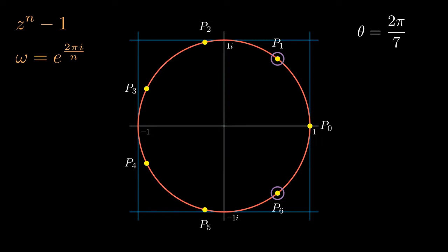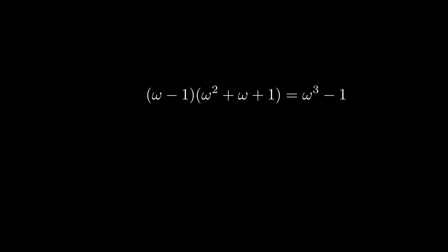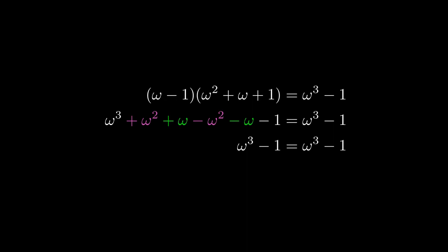The first algebra task is to expand the brackets to prove an identity. There should be six terms since it's two elements times three elements. The purple pieces cancel out and the green pieces cancel out, and we're left with what we wanted. A nice start.